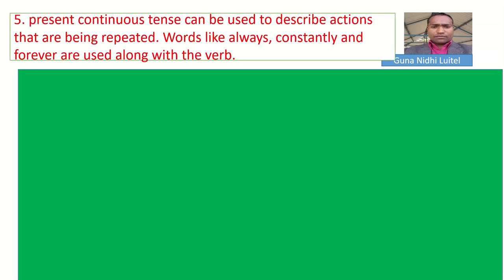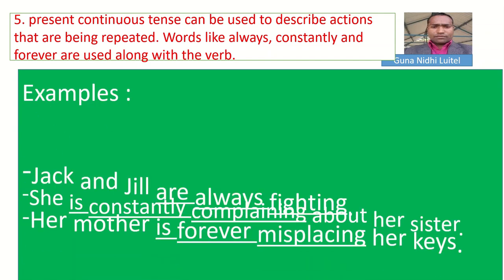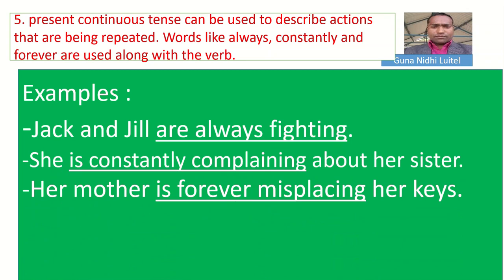Present continuous tense can be used to describe actions that are being repeated. Words like always, constantly, and forever are used along with the verbs. Let us see some examples of repeated actions. 'Jack and Jill are always fighting.' 'Always fighting.' 'Constantly complaining.' 'Forever misplacing.' In these examples — always fighting, constantly complaining, forever misplacing.